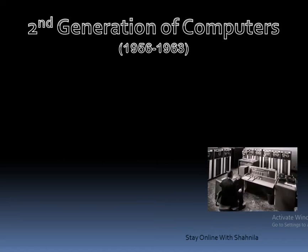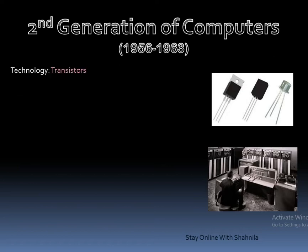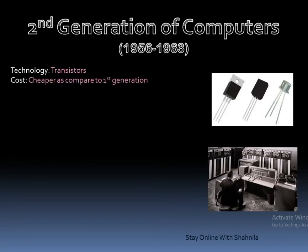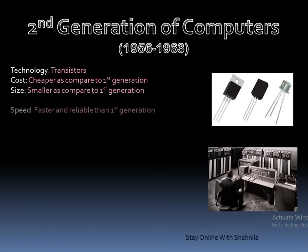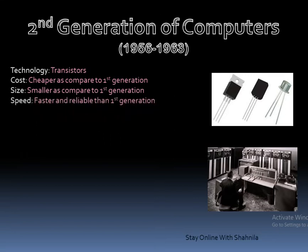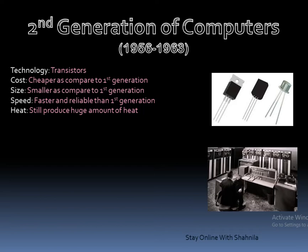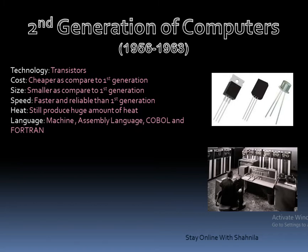Second generation computers appeared from 1956 to 1963. Transistors replaced vacuum tubes — transistors were more reliable and much faster than first generation computers. They were also cheaper and smaller in size than vacuum tubes, so second generation computers were more affordable and compact. The speed of second generation computers was also greater.